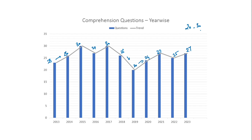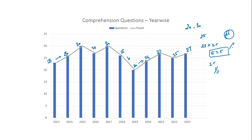Suppose UPSC asks 25 questions and you give 23 correct answers — you will get 57.5 marks. In CSAT each question carries 2.5 marks and for each wrong answer one-third of the marks will be reduced. Just by giving correct answers to 23 reading comprehension questions you can easily get 57.5 marks, and to qualify in CSAT you need 66 marks. So you're almost near 66 — that is why reading comprehension is so important.